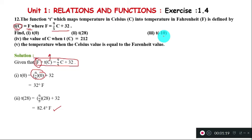Part (iii): Find T(-10). T(-10) = 9/5 times -10 plus 32. This equals -18 plus 32, which gives us 14 degrees Fahrenheit.